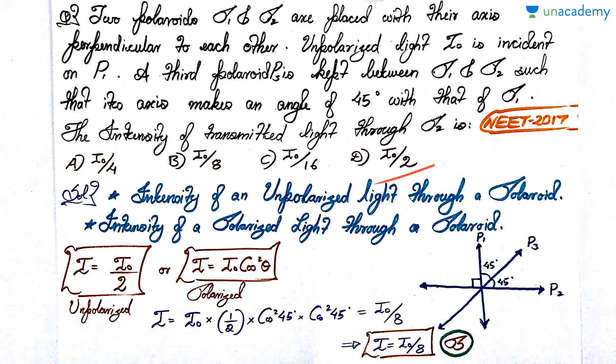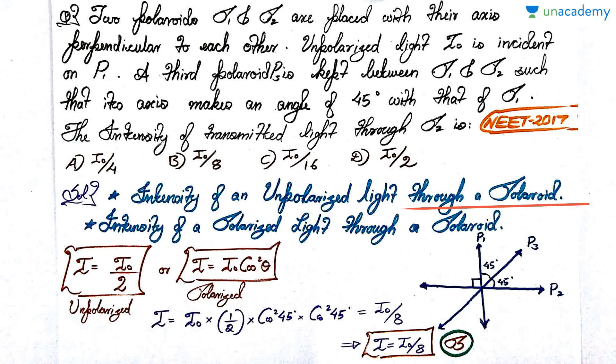Please pause the video, attempt the question, and then we'll discuss the solution. To solve this you need two concepts: first, what is the intensity of unpolarized light when passed through a polaroid; and second, what happens to the intensity of polarized light when passed through a polaroid. These two are very different things.